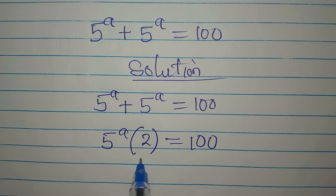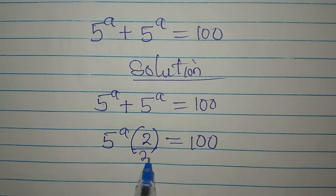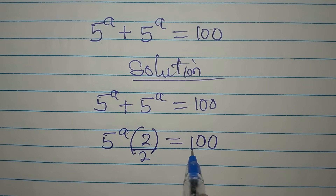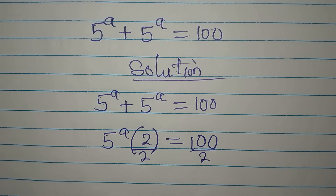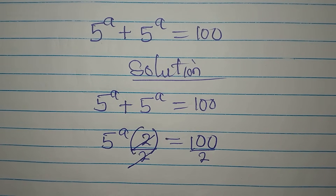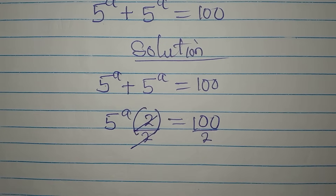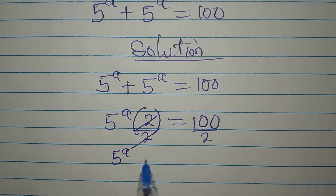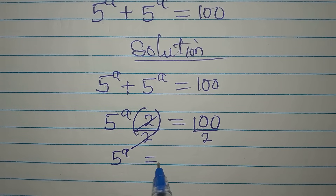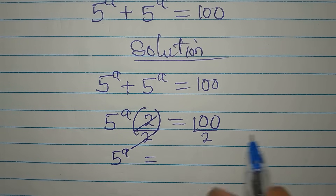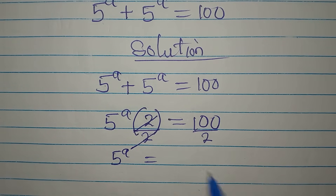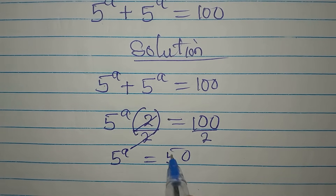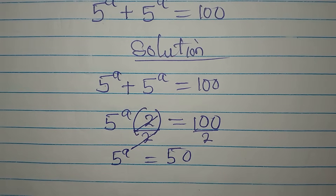To remove the two, I'll divide both sides by two. This gives us 5 to the power of a equals 100 divided by 2, which is 50.